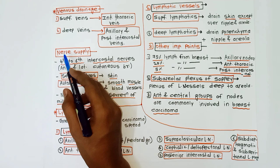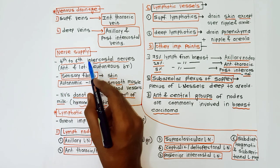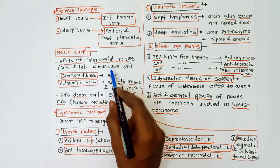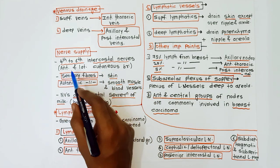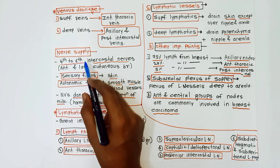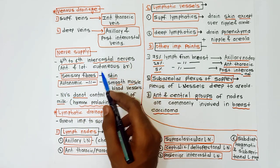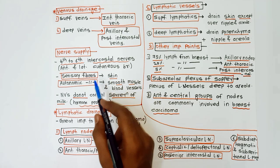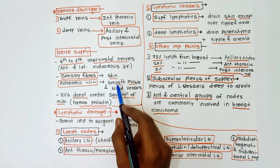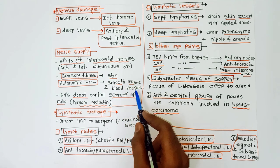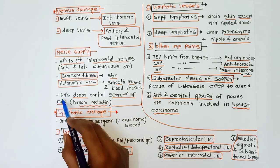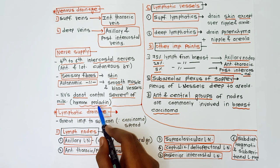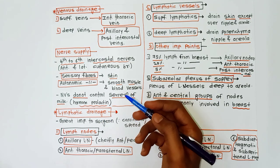The nerve supply of the breast is from the anterior and lateral cutaneous branches of the fourth to sixth intercostal nerves. The sensory fibers supply the skin, and autonomic fibers supply the smooth muscle and blood vessels. Importantly, nerves do not control the secretion of milk — it is controlled by the hormone prolactin.